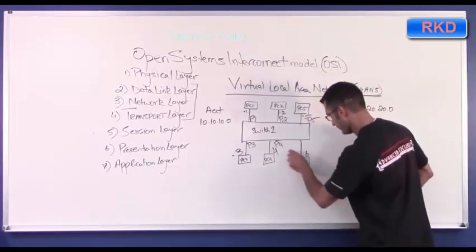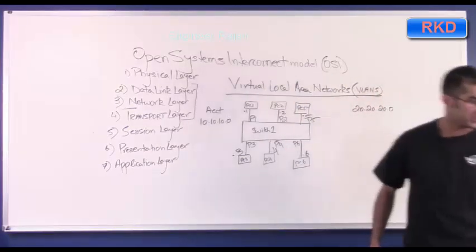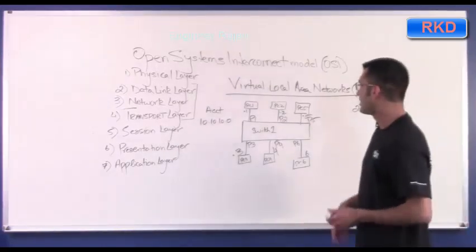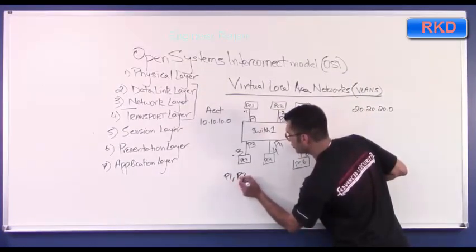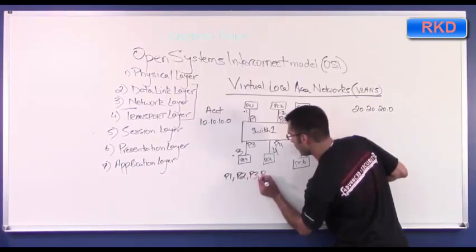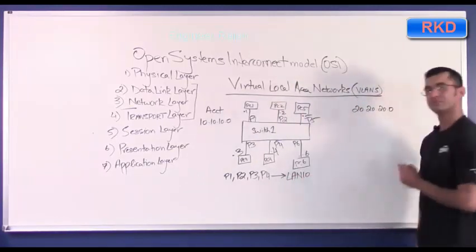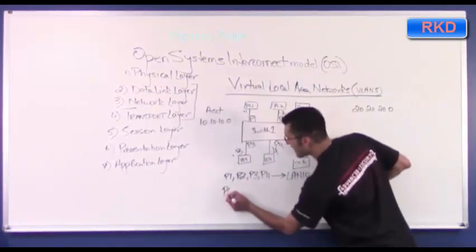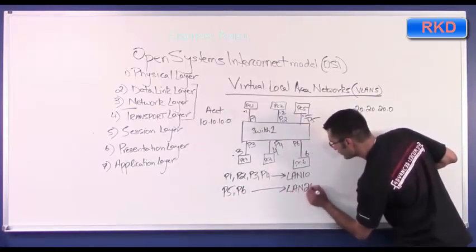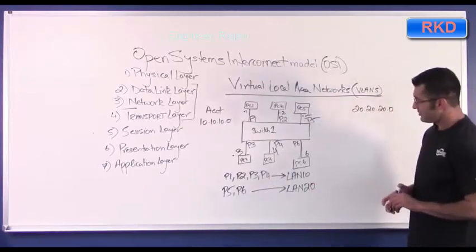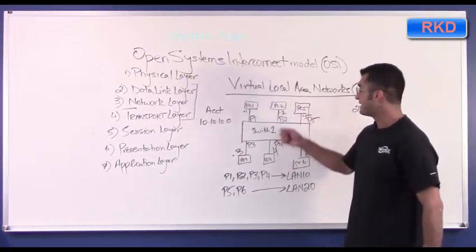Now let's say inside the switch I log in and do some configurations where I tell the switch that port 1, port 2, port 3, and port 4 belong to LAN number 10, and port 5 and port 6 belong to LAN 20. What I've done is actually created two switches—two virtual switches—inside of the same physical device.